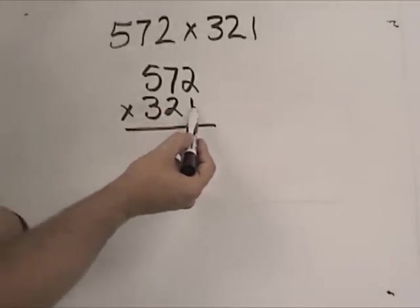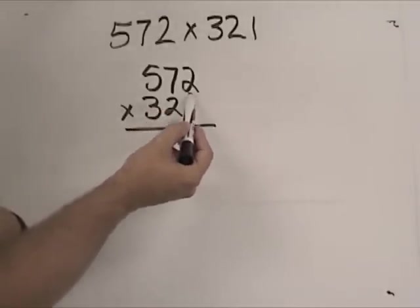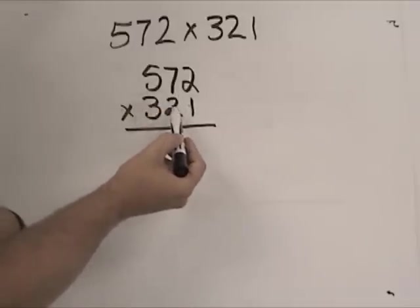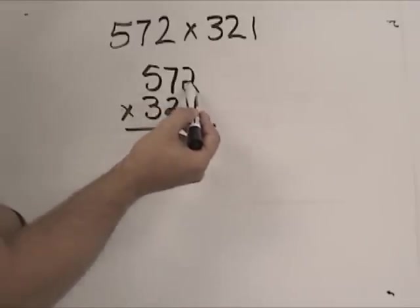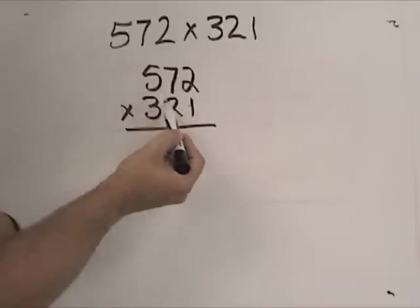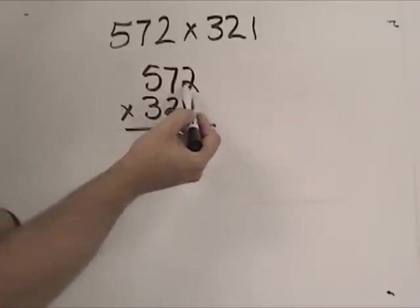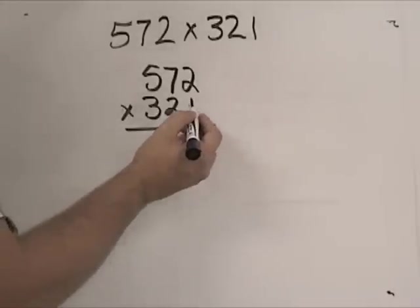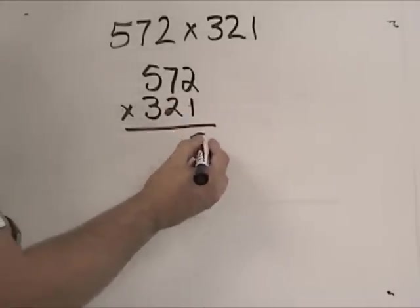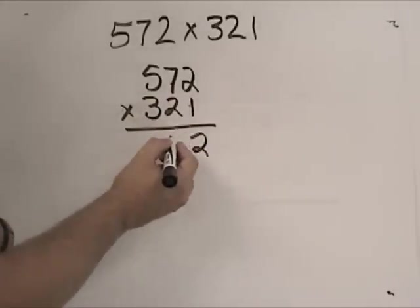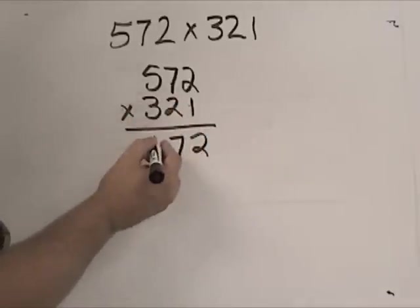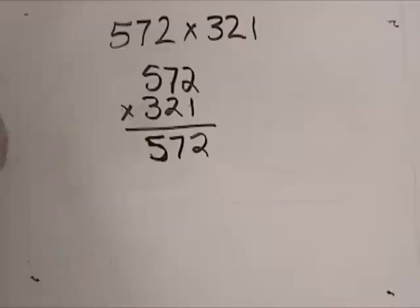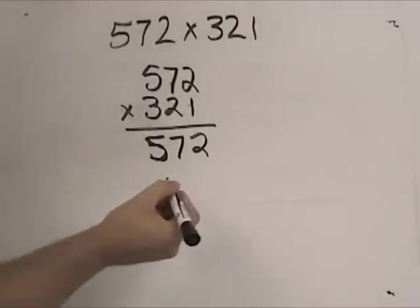I would do my same pattern. Start off with this number multiplied by the 2, multiplied by the 70, multiplied by the 500. Then I would multiply this 20 times the 2 times the 70 times the 500. Then I multiply the 300 times the 2 times the 70 times the 500. To start off with, 1 times 2 is 2, 1 times 70 is 70, and 1 times 500 is 500. I would do that nice and easy there for that first one.